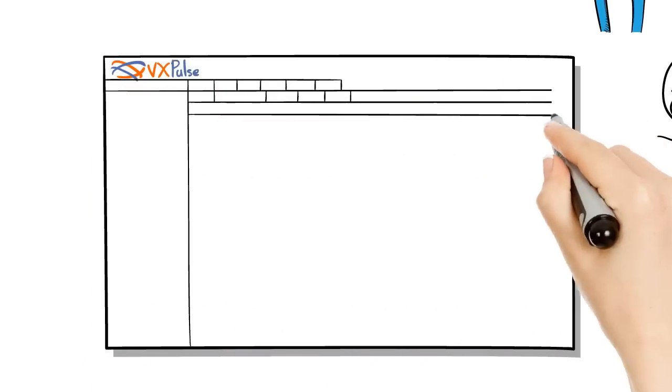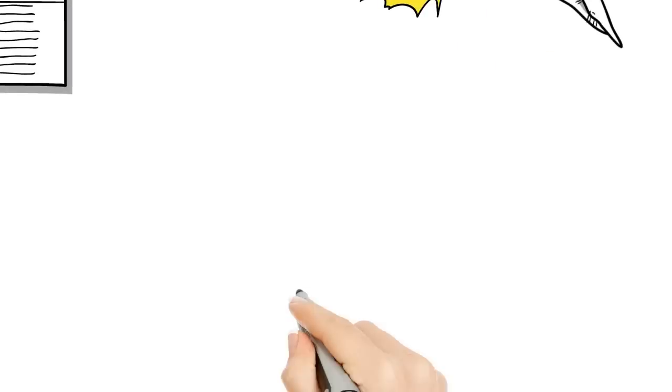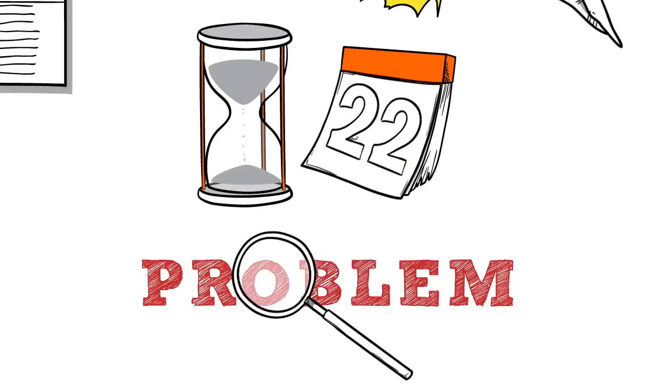Once that's done, he uses VX Pulse for a pre-network assessment. He can measure MOS scores, which is the measurement of call quality, for different times of day and identify and solve potential problems before going live.